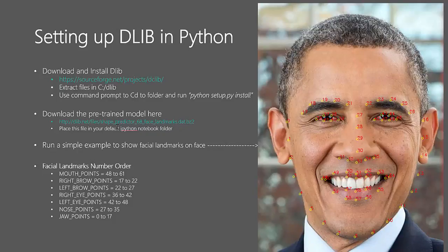Once we've done that, we're going to run some examples using dlib that will generate facial landmarks. This landmark detection gives us 68 facial key points or landmarks. Mouth points are landmarks 48 to 61 — you can see it starts at 48 and goes all the way to 61. Right eyebrow is the range 17 to 22, and left eyebrow is 22 to 26, though that should actually be 21.